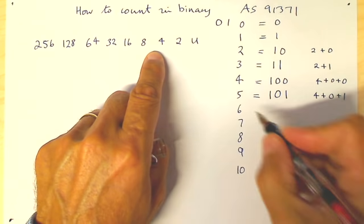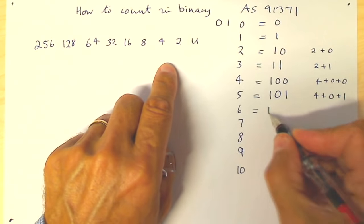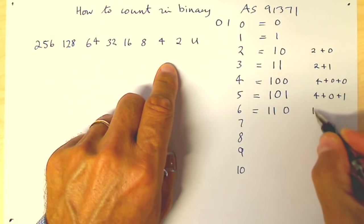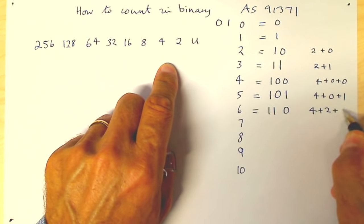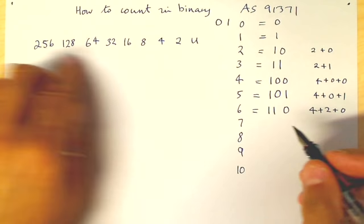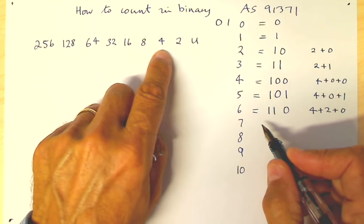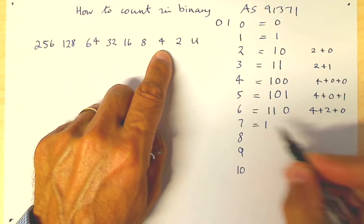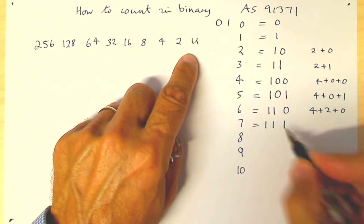So 6 is a 4 and a 2 and no units. And it's dead easy. So we can do 7. 8 is too big, so we do a 4, a 2, and a 1.